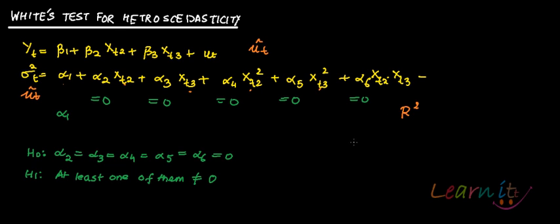And you will be computing NR squared. R squared from this auxiliary regression, NR squared. Here, this is your LM test statistic. LM test statistic, which is equal to NR squared. And this will follow Chi squared, with P minus 1 degrees of freedom. So, how many degrees of freedom? 5.